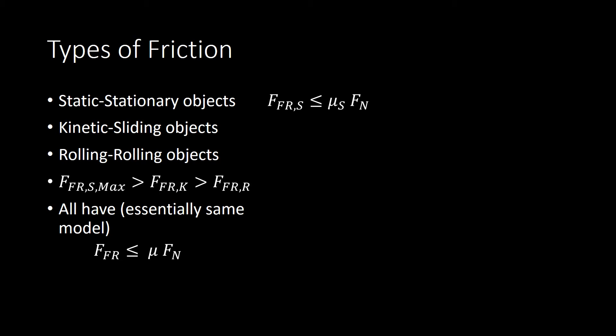And the reason it's less than or equal to is because of course, if I'm not trying to move the object at all, then friction has nothing to do to oppose that lack of motion. So if friction has nothing to do, then it won't do anything and the force of friction is zero. But if I start to push, then the force of friction will increase up until it reaches this value given by the product of the coefficient of friction times the normal force.